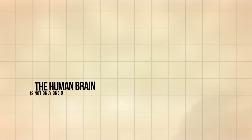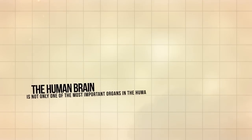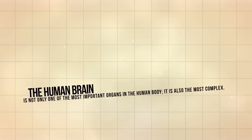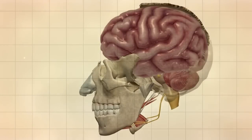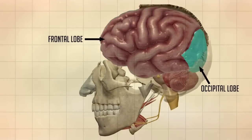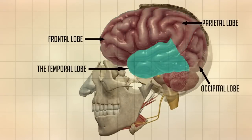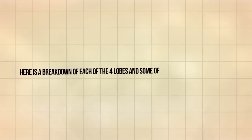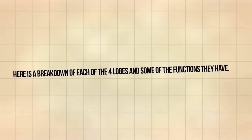The human brain is not only one of the most important organs in the human body, it is also the most complex. The brain is divided into four major sections known as lobes: the frontal lobe, the occipital lobe, the parietal lobe, and the temporal lobe, which have different locations and functions that support the response and actions of the human body. Here is a breakdown of each of the four lobes and some of the functions they have.